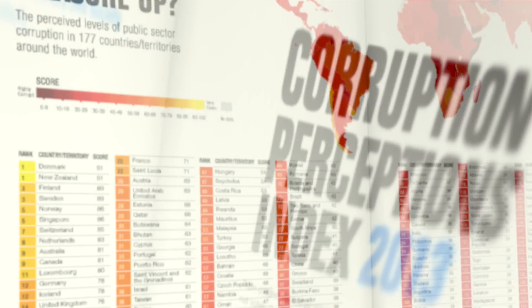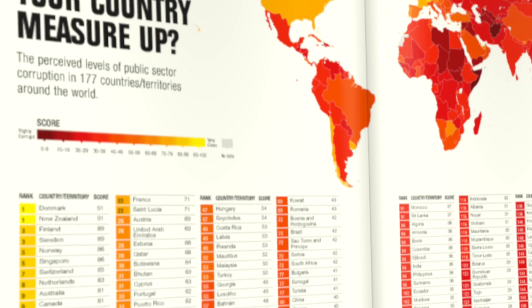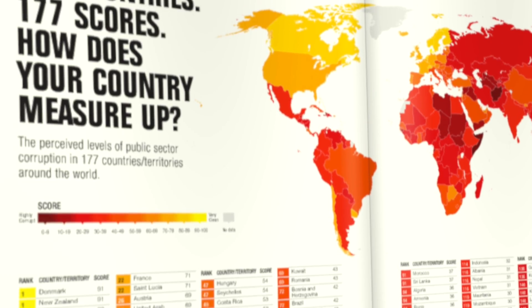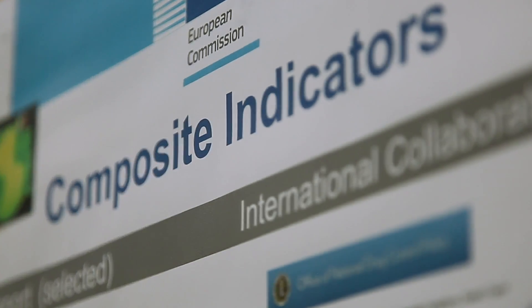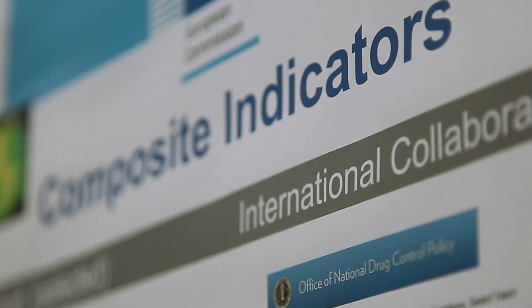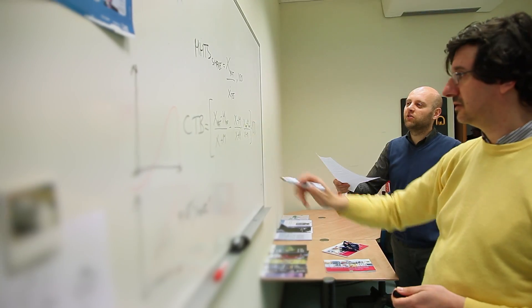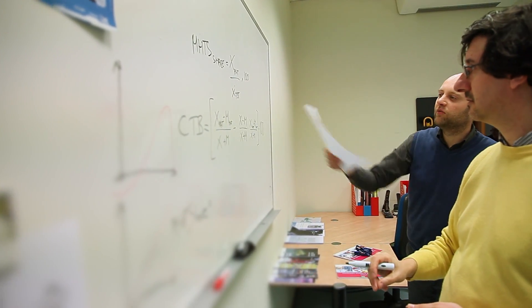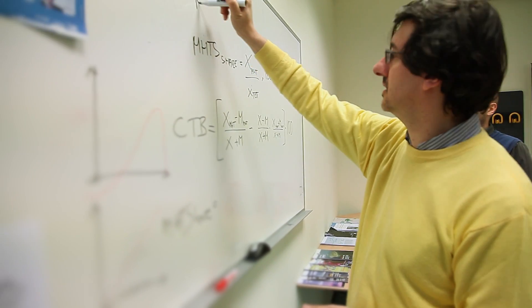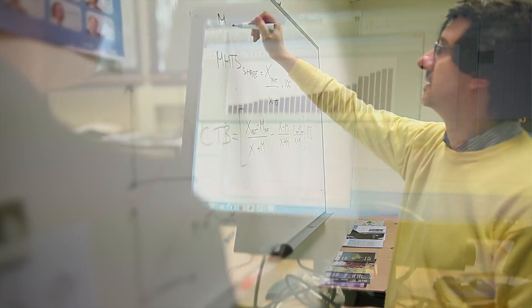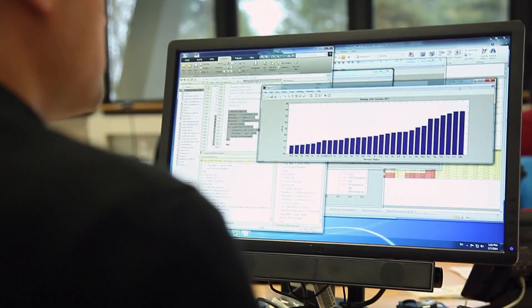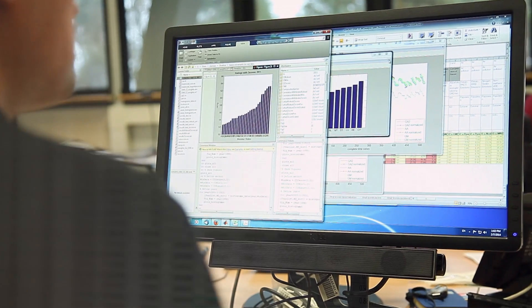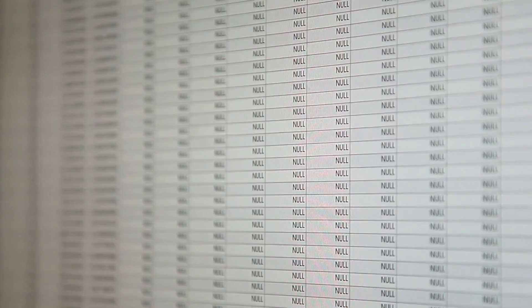At the Joint Research Centre here in Ispra, we have worked on composite indicators since about 2002. We try to develop new methods and use some old methods. There are key questions we ask when we build a composite indicator: Is it well-built and well-structured? Is it transparent? Is it reliable?